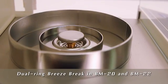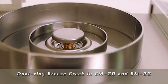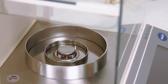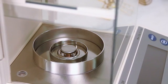The innovative dual-ring breeze break reduces drafts in the BM20 and BM22 microbalances. This feature makes a secondary inner chamber unnecessary to achieve microgram readability, giving A&D's microbalances large weighing chambers.